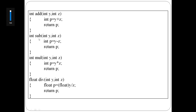For subtraction, the function name is 'sub', two parameters y and z, both integers. int p equal to y minus z — the difference is calculated and assigned to p, then return p. The difference is returned. p is an integer number so return type is int.